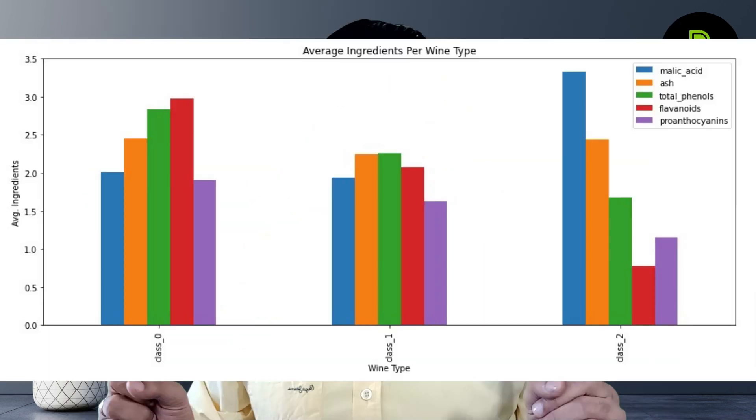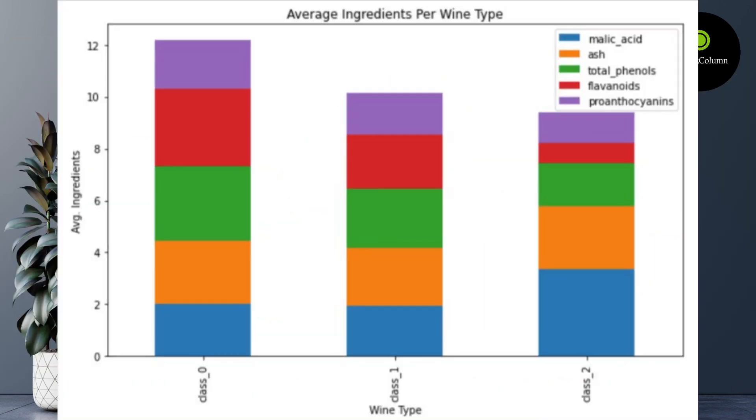So in today's video I will explain how to improve the look of your matplotlib charts, from something like this to something like this, and we will do it with just one line of code. So without further ado, let's jump to my screen and improve the look of our matplotlib charts.